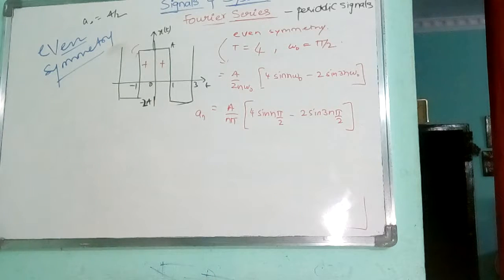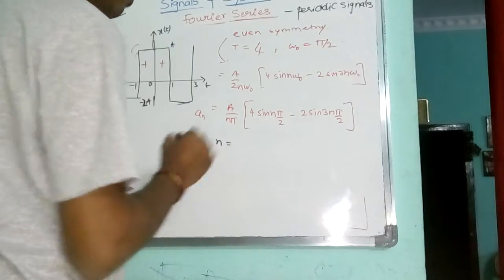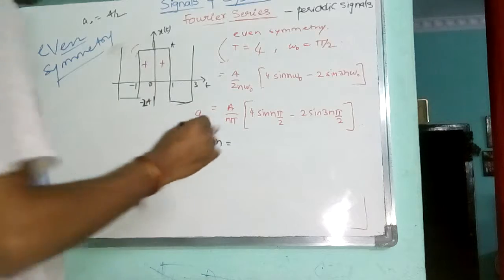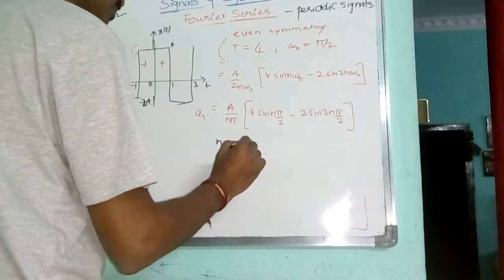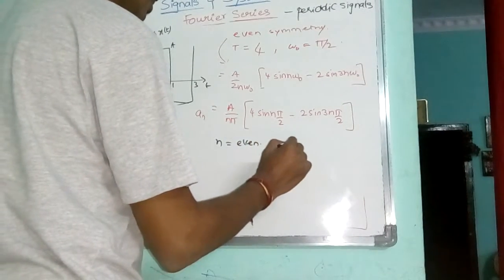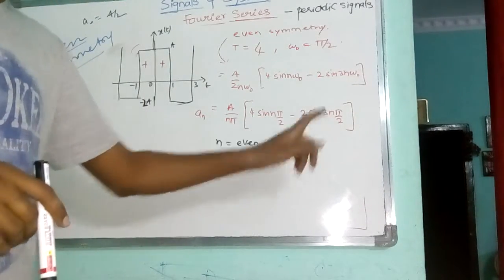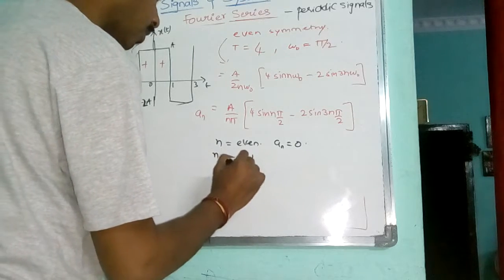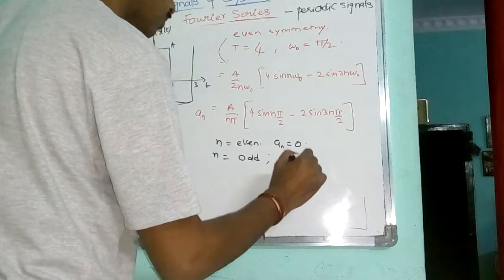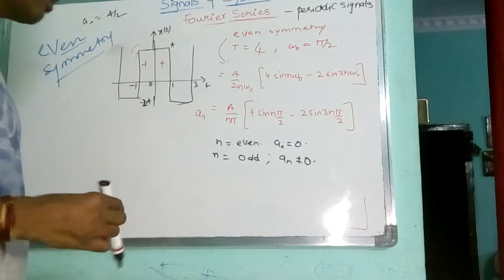Now, by looking at this equation, we can directly say what will be the output. Now, depending upon N: whenever N is even, A N will be 0. Because N is 4 here, sin 2 pi is 0. N is 4 here, sin 6 pi is also 0. Whenever N is odd, A N is non-zero. So, this exists only for the odd values of N.